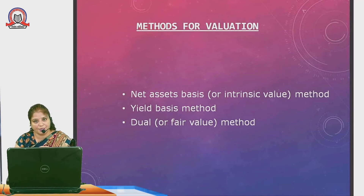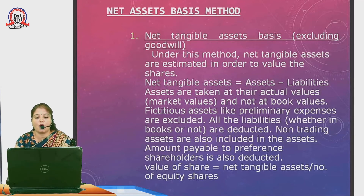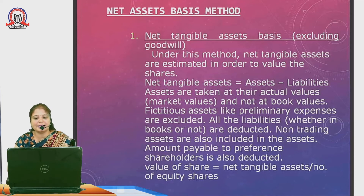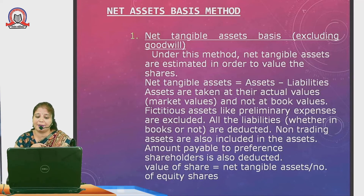There are various methods for valuation of shares: net asset method, yield basis method, and dual method (also called fair value method). Under the net asset method excluding goodwill, tangible assets are estimated to value the shares — that is assets less liabilities — taken at market value, not book value. Fictitious assets like preliminary expenses are excluded and liabilities are deducted. The amount payable to preference shareholders is also deducted. Value per share = Assets available to equity shareholders ÷ Number of equity shares. Example: Assets rupees 10 lakh, liabilities rupees 2 lakh, 50,000 shares — value = 8 lakh ÷ 50,000 = rupees 16 per share.